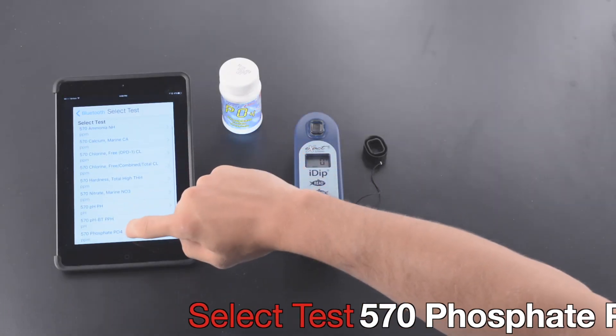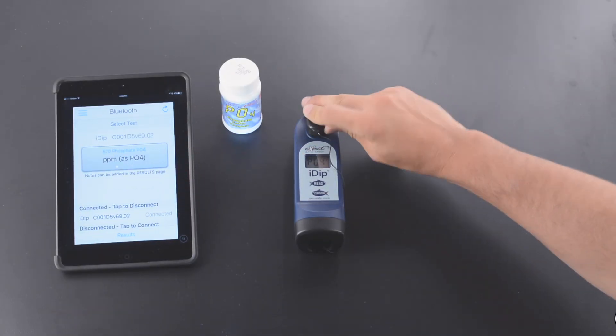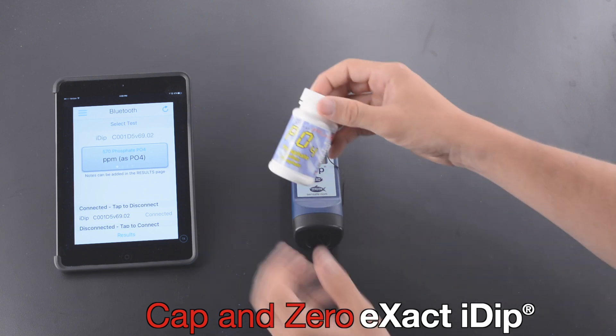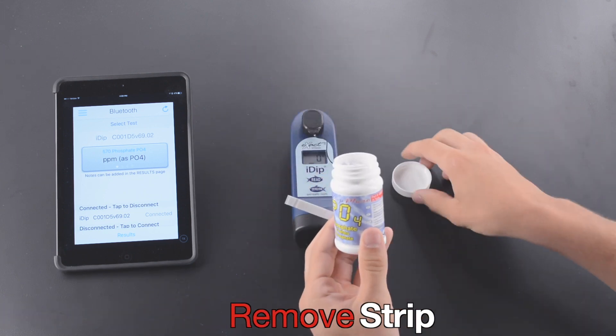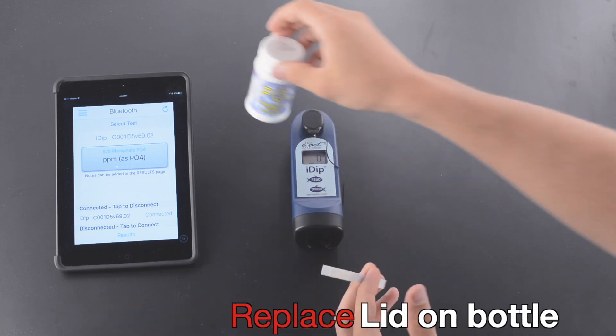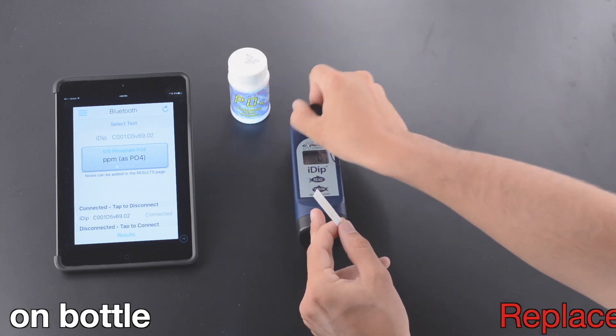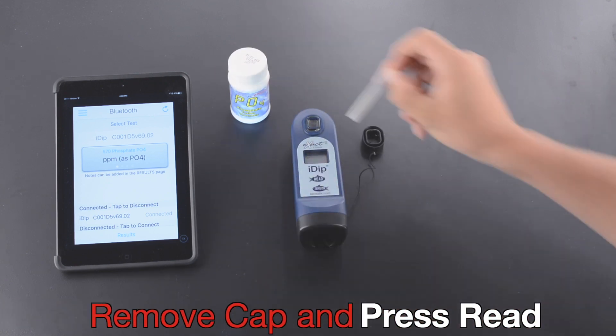Select Test, then tap and zero the Xact iDip. Remove the strip and replace the lid on the bottle. Remove the tap and press Read.